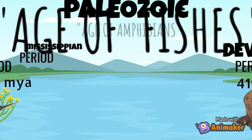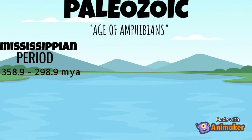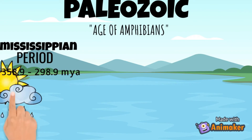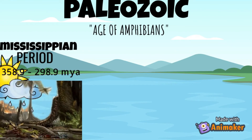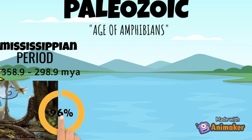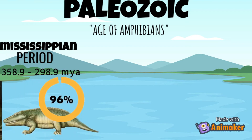Next is the Mississippian period, which was 358.9 to 298.9 million years ago. During this period, the cooling and drying of the climate led to the Carboniferous Rainforest Collapse. In this period, 96% of all vertebrates became extinct.